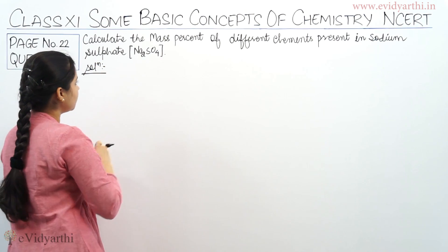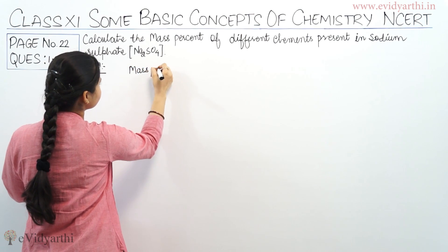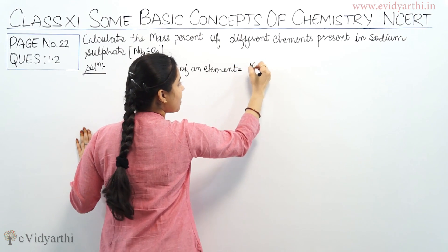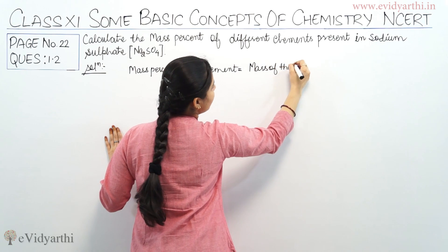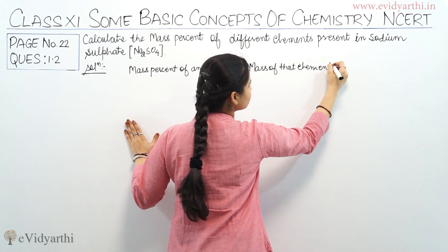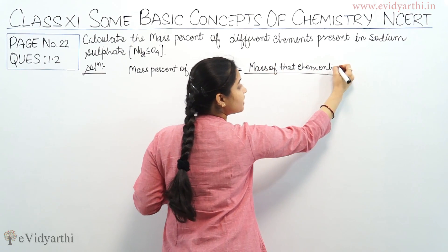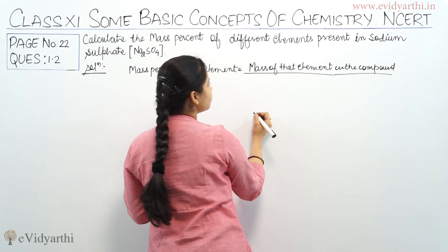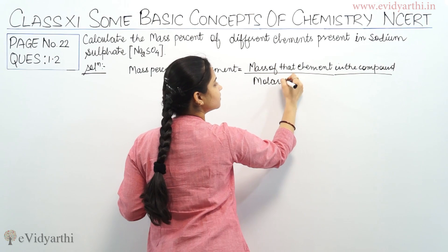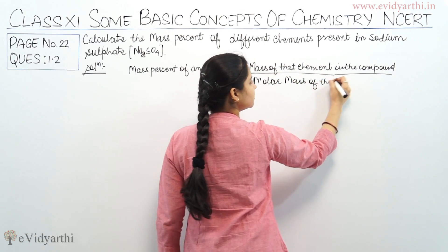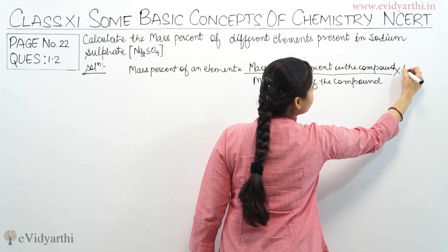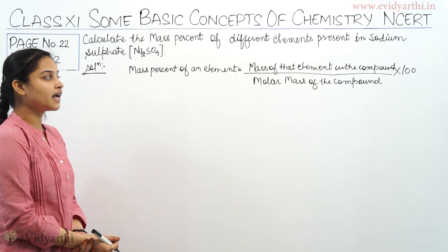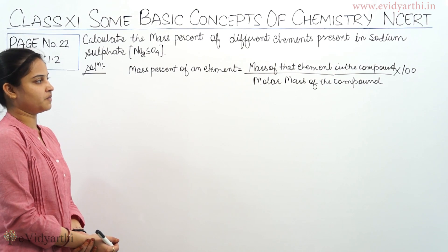Mass percent of an element is equal to the mass of that element in the compound, divided by the molar mass of the compound, multiplied by 100.